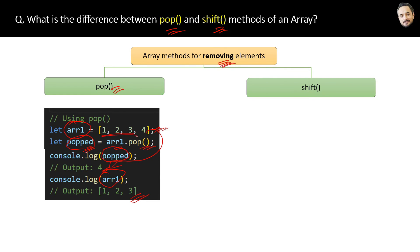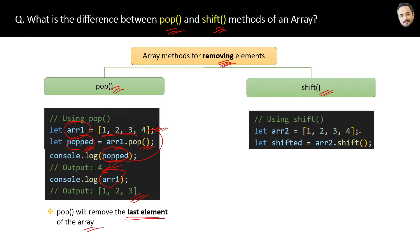The point is, pop method will remove the last element of the array. The next method for removing the array's elements is shift. Here is the array and now we will apply the shift method to it.